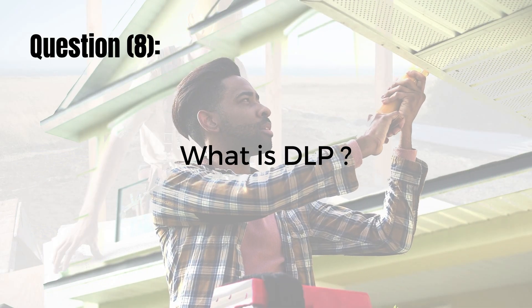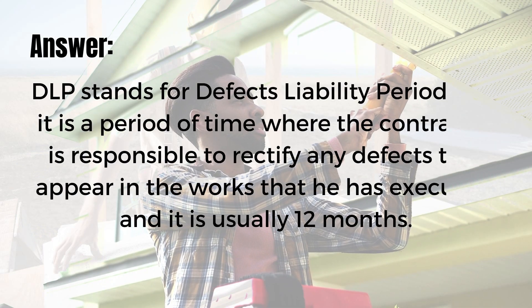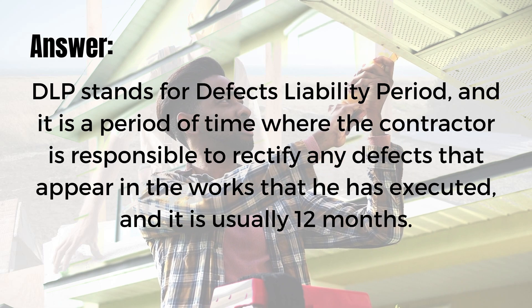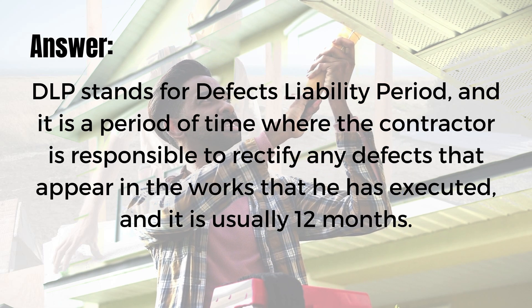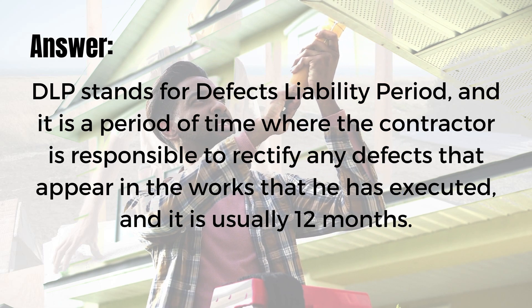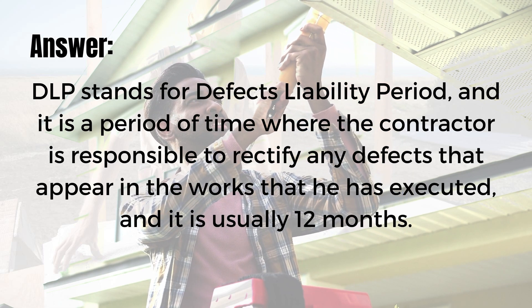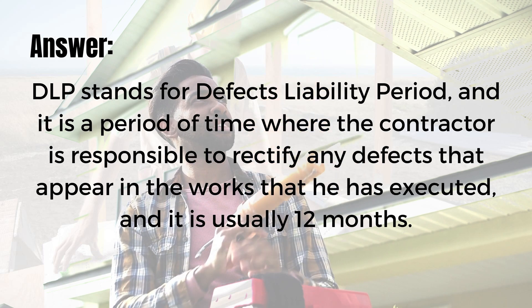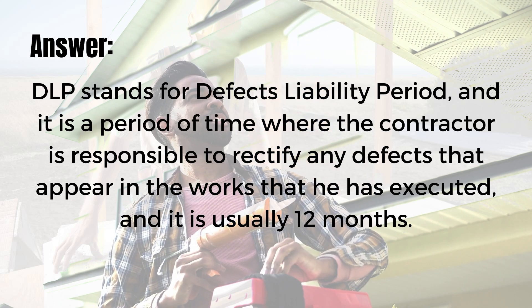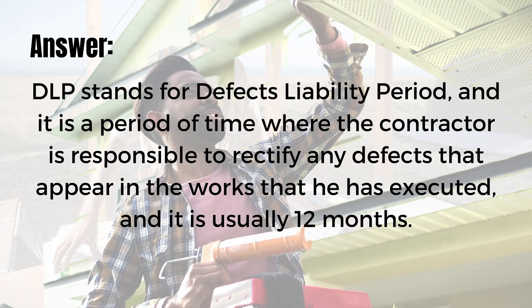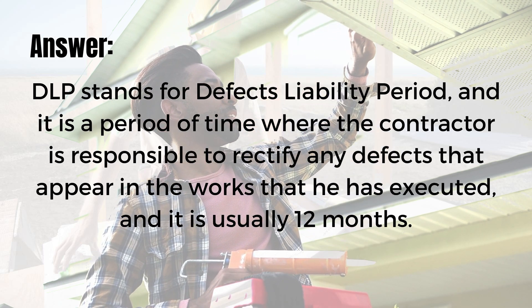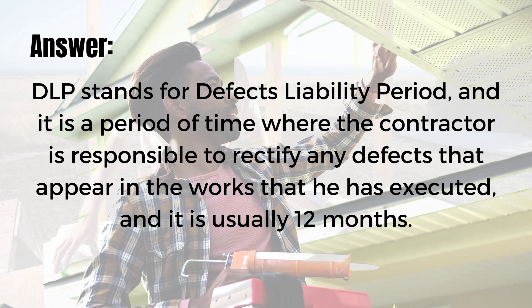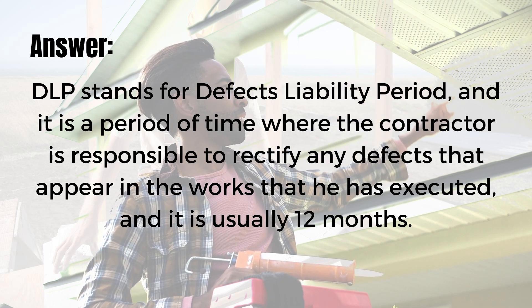Question number eight: what is DLP? DLP stands for defects liability period. It is a period of time where the contractor is responsible to rectify any defects that appear in the works they have executed, and it is usually 12 months.